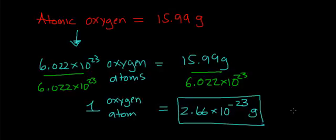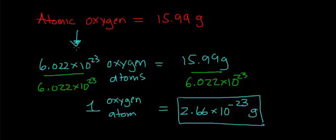That would be very, very difficult to mass out on an individual scale. That's why we mass out not one individual oxygen atom, but a large number of oxygen atoms — in this case, one mole, or 6.022 times 10 to the 23rd oxygen atoms.